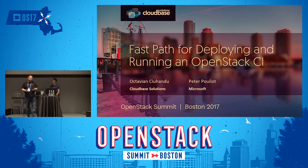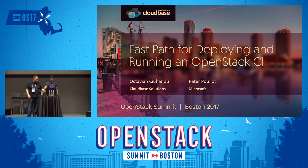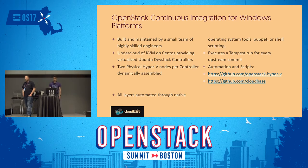We'd like to start with a little bit of history of how we got into CI, the path we took to get there, the choices that we made, and some of the problems that we've seen. It started with a really small group of individuals that originally began building the continuous integration infrastructure.